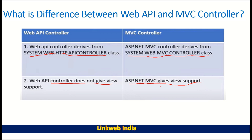Whenever you have a requirement to develop a RESTful Web API, you need to create a Web API controller. Whenever you need action results, controllers, and views, you should create an MVC controller. Web API controller returns JSON, HTML, and strings.